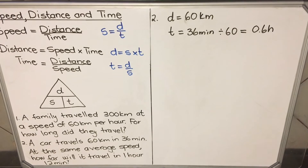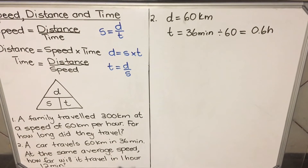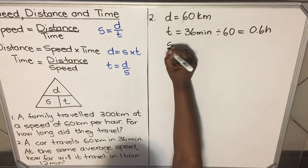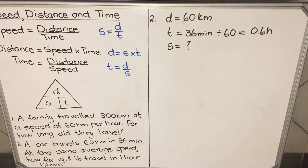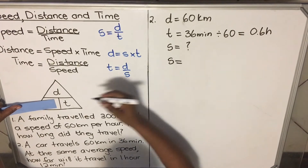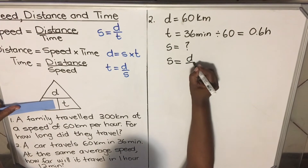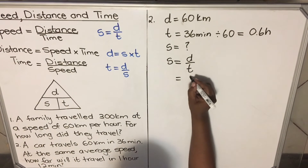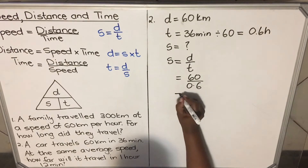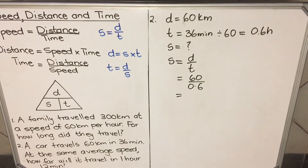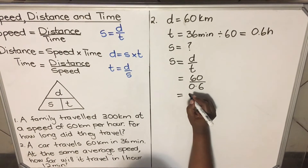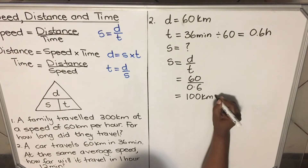At the same average speed — so we must find the speed this car was traveling at. Speed = distance over time. My distance is 60 and my time is 0.6, so it's 60 divided by 0.6. My speed is 100 kilometers per hour.